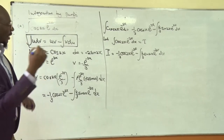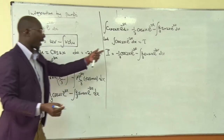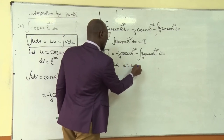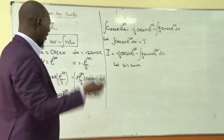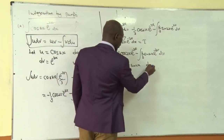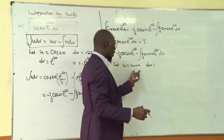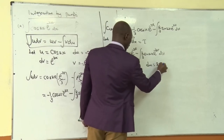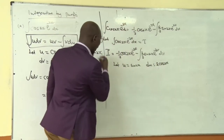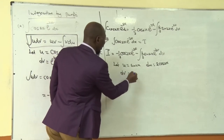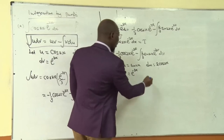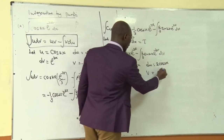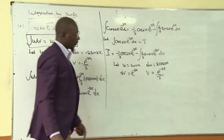We solve this second integral again by parts. We let the trigonometric part be u again. Let u = sin(2x). Then du = 2·cos(2x) dx, since differentiating sine gives positive cosine with the coefficient. Let dv = e^(−3x) dx, so v = e^(−3x)/(−3).